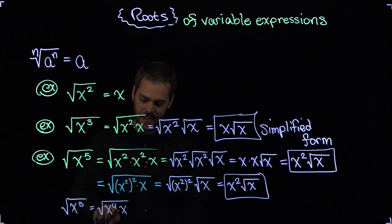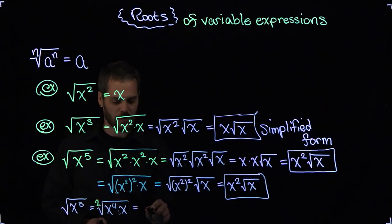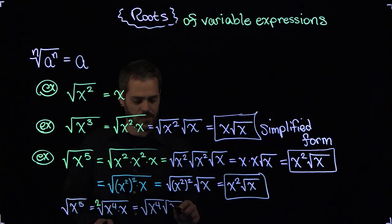I can take the power of x and divide it by the index, which is not shown here because it's a square root, to get my final power of x on the outside. So let me separate this one more time. It's the square root of x to the fourth times the square root of x. And now I'm going to apply the principle I just told you.